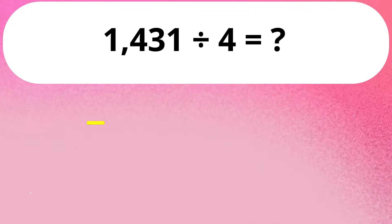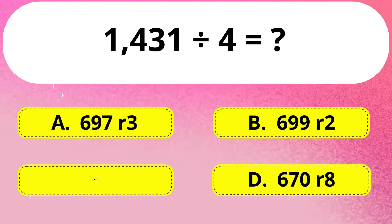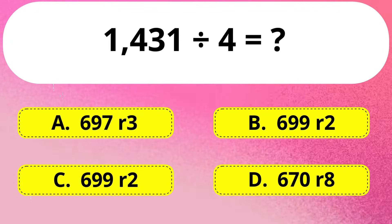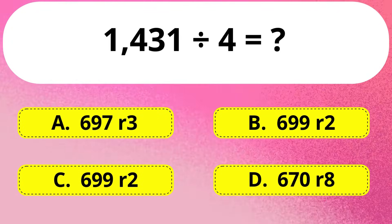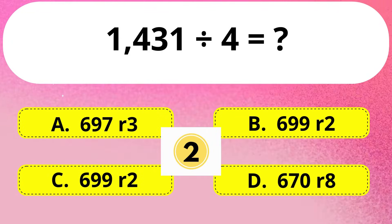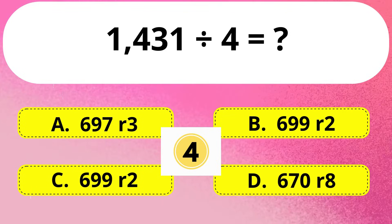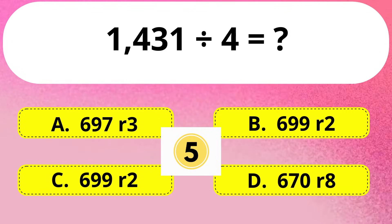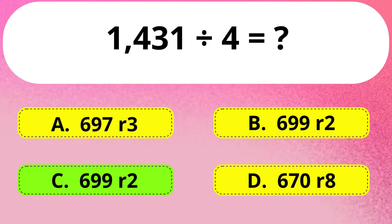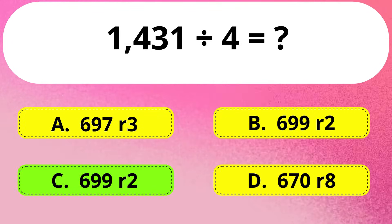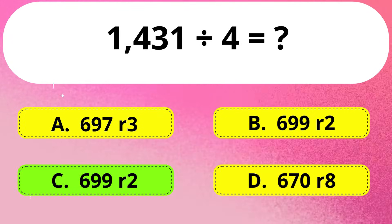Next question. 1431 divided by 4 is equal to how much? The right answer is Option C: 699 as the quotient, remainder is 2.